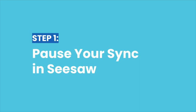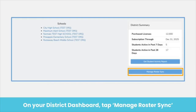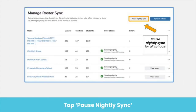Step 1: Pause your sync district-wide. Pausing your sync in Seesaw ensures your data is not archived or changed before you are ready. Navigate to your Seesaw district dashboard and tap Manage Roster Sync. Tap Pause Nightly Sync to pause the sync between Clever or Classlink and Seesaw. That's it — your sync is paused.